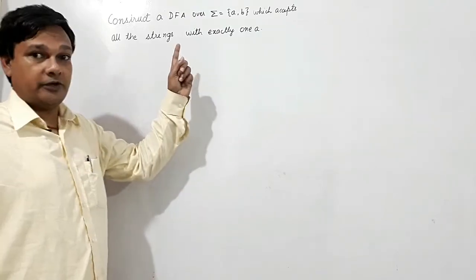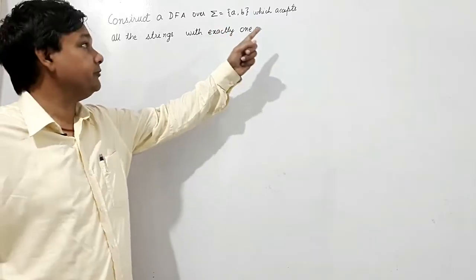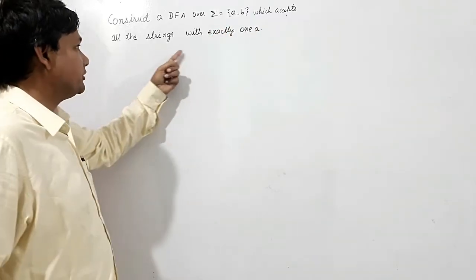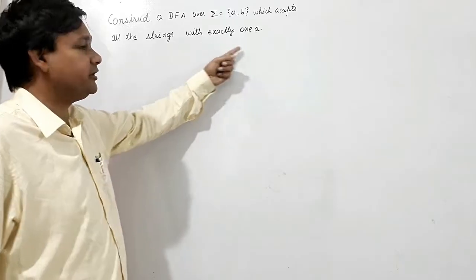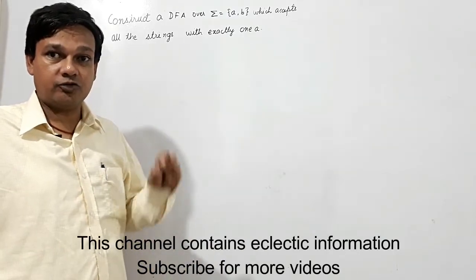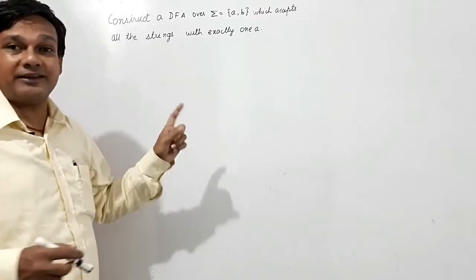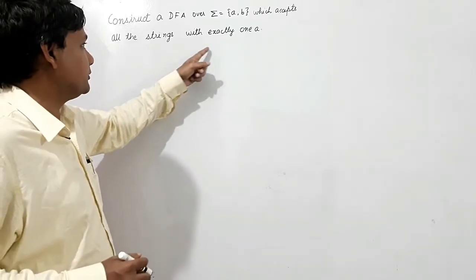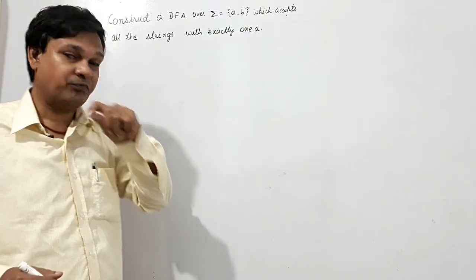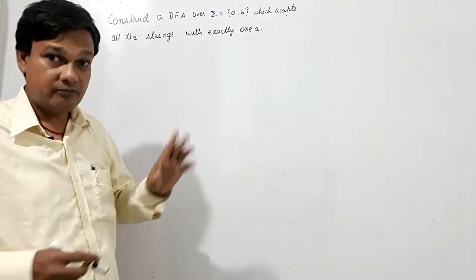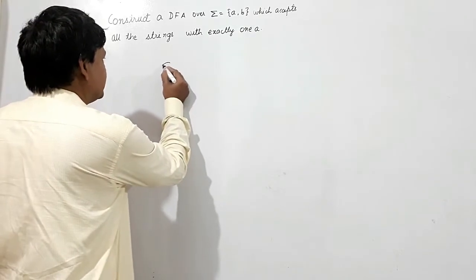We have to construct a DFA over sigma equal to {A, B} which accepts all the strings with exactly one A. It should contain only one A. The smallest string of this type is A, so there will be one start state.